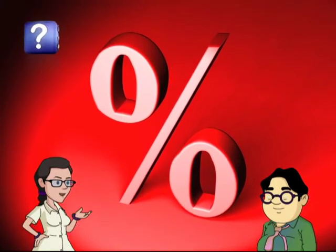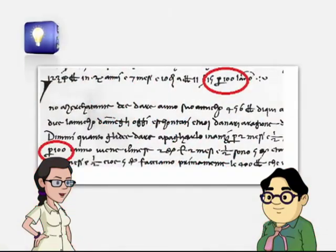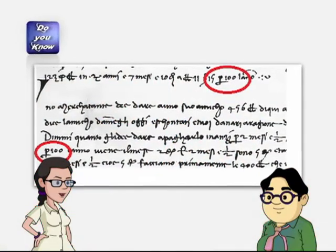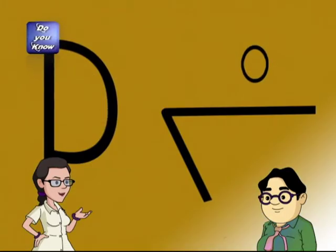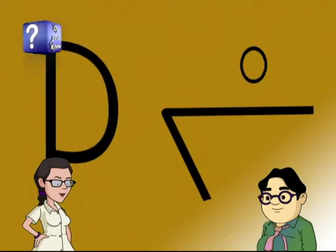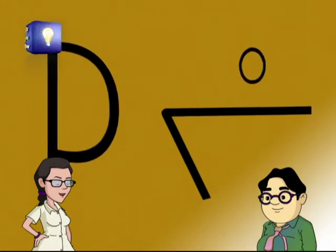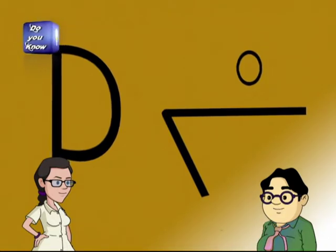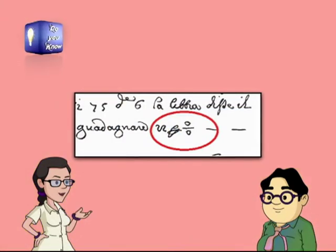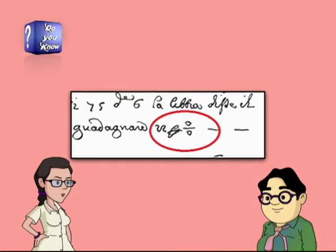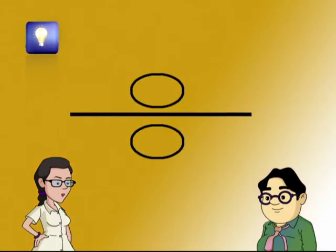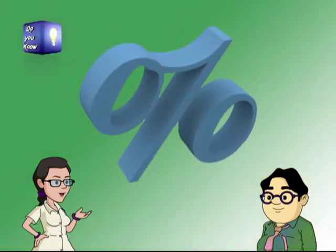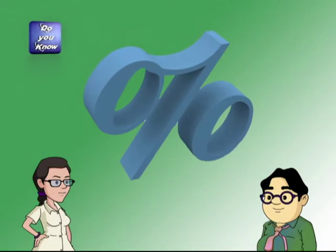The percent sign has evolved from a symbol introduced in an anonymous Italian manuscript of 1425. The author used that sign instead of 'per hundred' or 'p cento,' which was commonly used then. By 1650, part of the symbol was changed, and eventually the 'per' was dropped, leaving the symbol to stand alone — and this in turn became the percent sign '%' we use today.